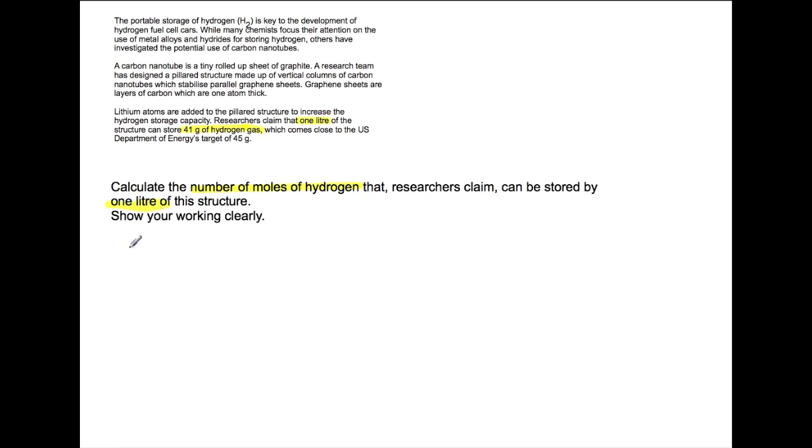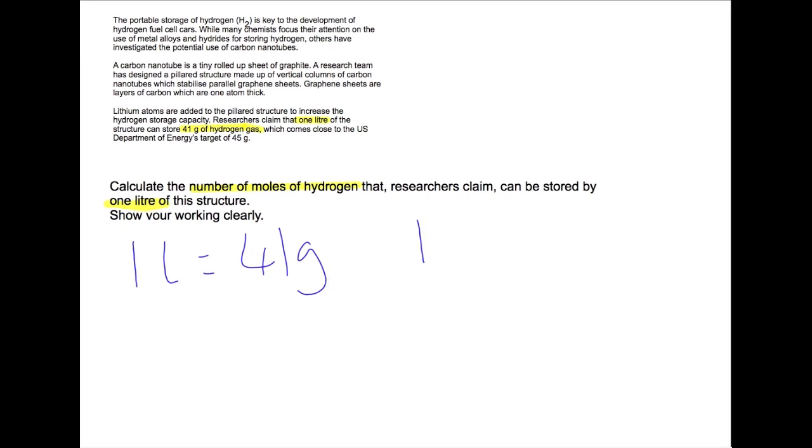So in 1 litre we can store 41 grams. We want to turn that 41 grams into moles. Now we are also told in the question that hydrogen has the formula H2 which you should know as it is a diatomic molecule.